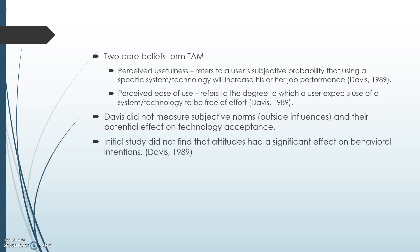There are two core beliefs that form the Technology Acceptance Model. Perceived usefulness is defined as the degree to which an individual believes that using a particular system will enhance his or her job performance. Perceived ease of use refers to the degree to which an individual believes that using a particular system will be free of physical and mental effort. Perceived ease of use was hypothesized to have a direct effect on usefulness, in that a system that is easier to use would make an individual more productive and more likely to use the system.